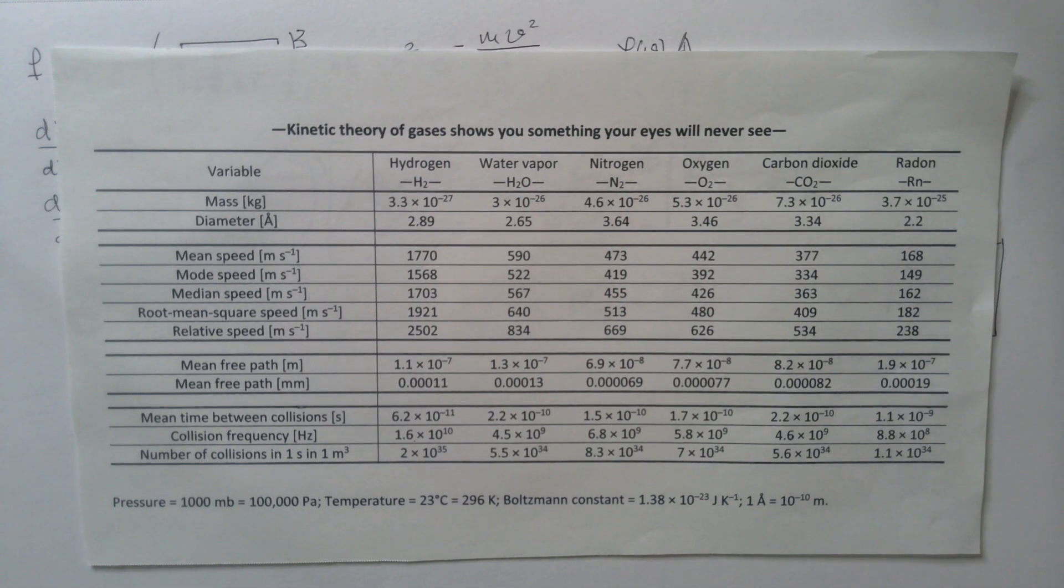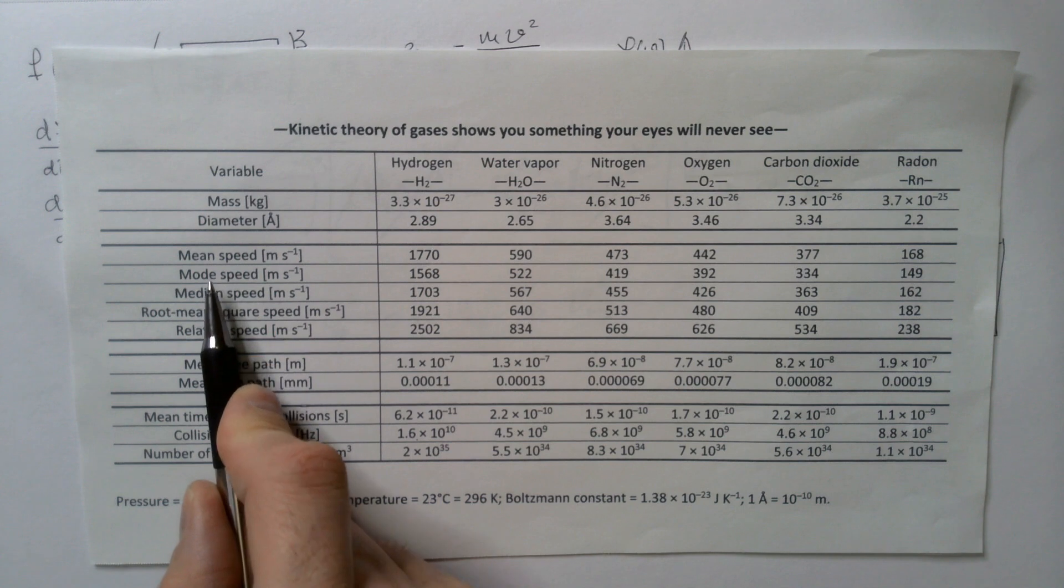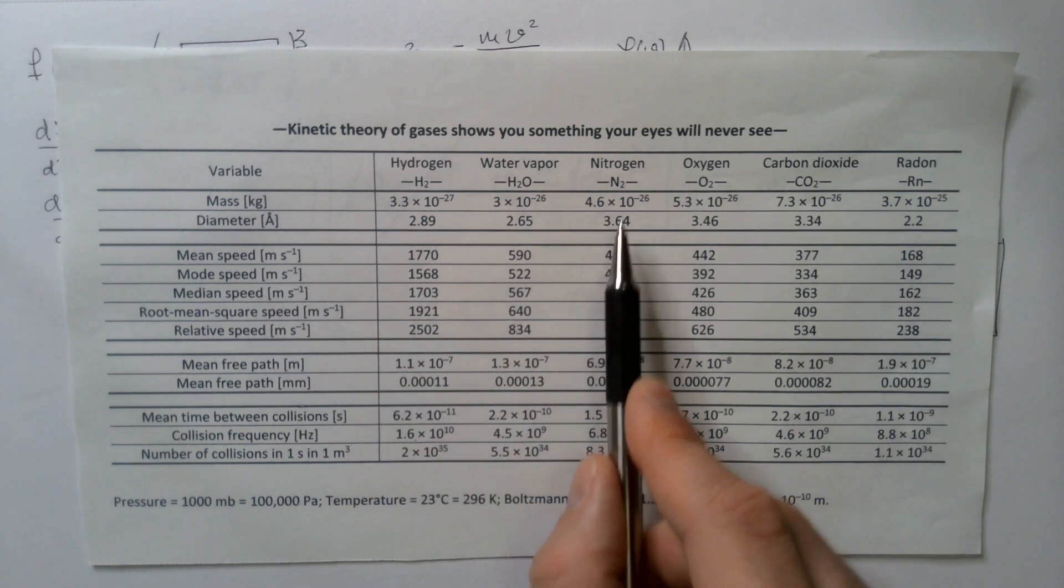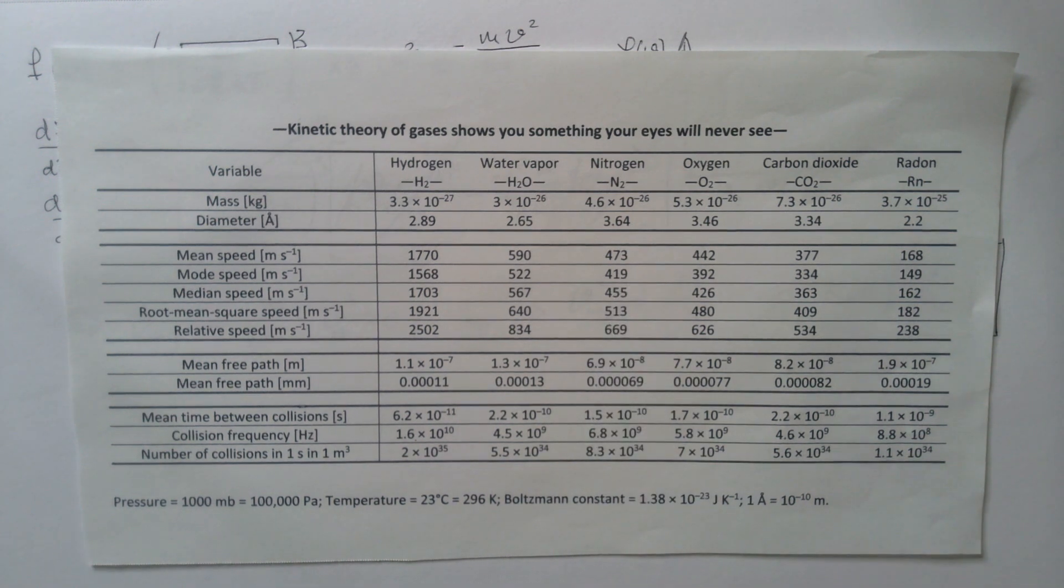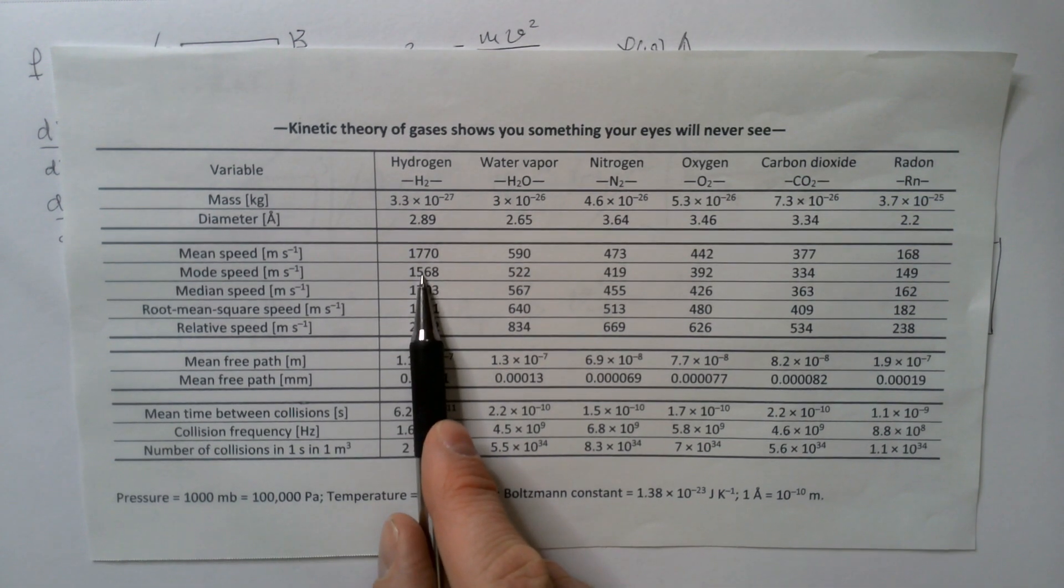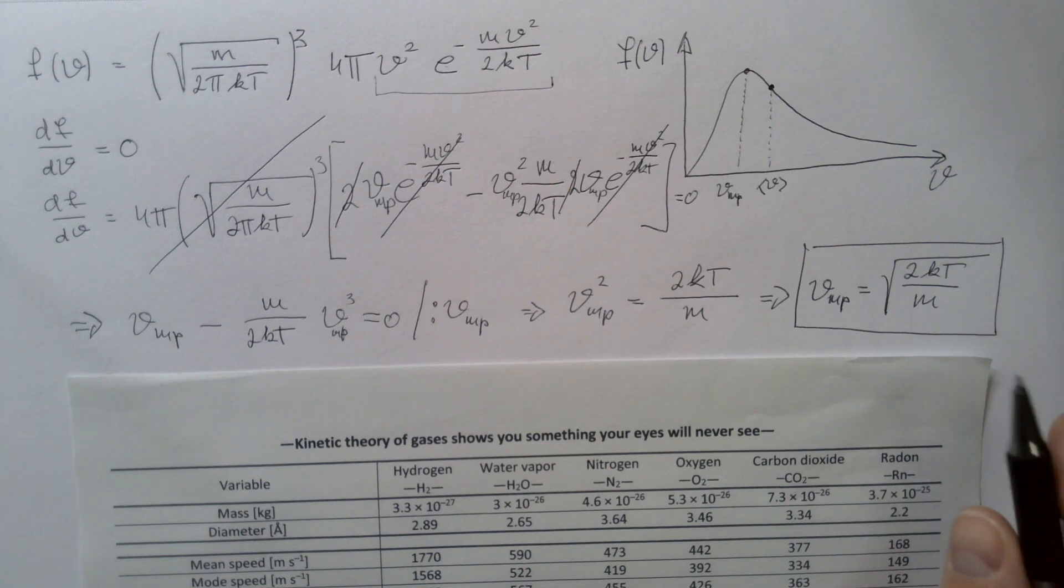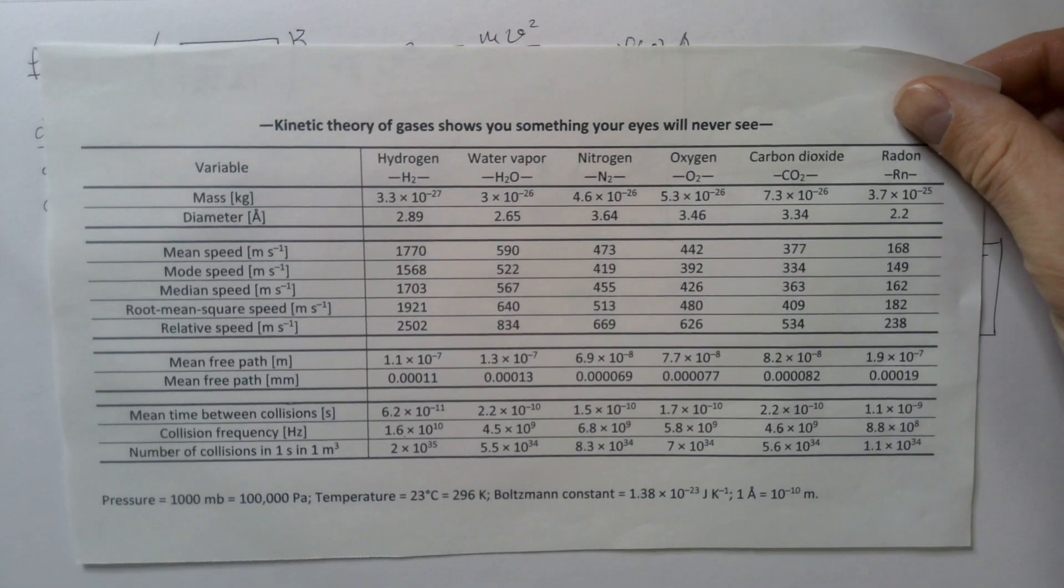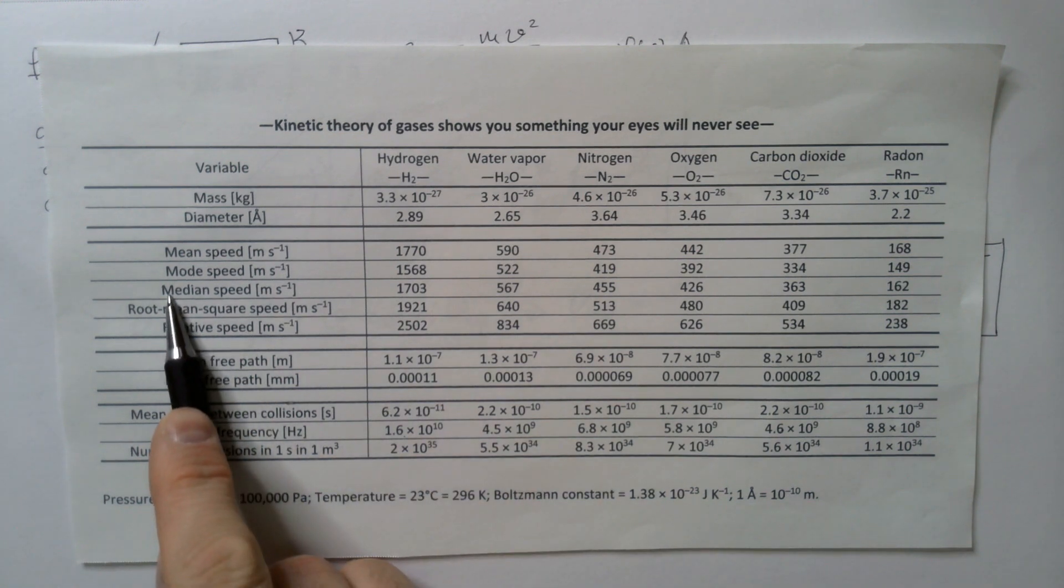Here is a table that shows mode speed, which is the most probable speed that we just calculated, this is fancier technical name, for different gases in air as well as radon. Notice that most probable speed of nitrogen at the temperature of 23 degrees Celsius is 419 meters per second. The speed of hydrogen at the same temperature is much, much higher, and that's because hydrogen is lighter than nitrogen, and you will see that the heavier the atom, the smallest most probable speed, which is in accordance with our table over here.